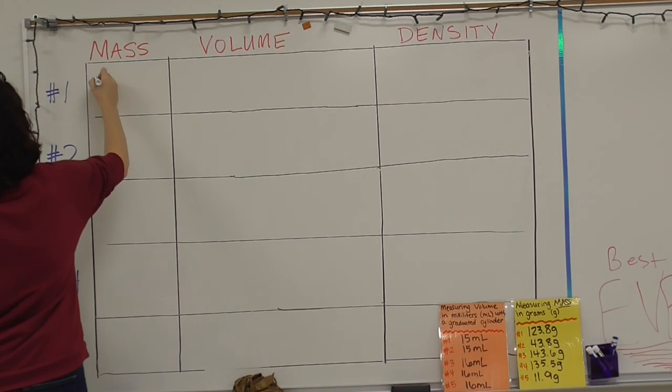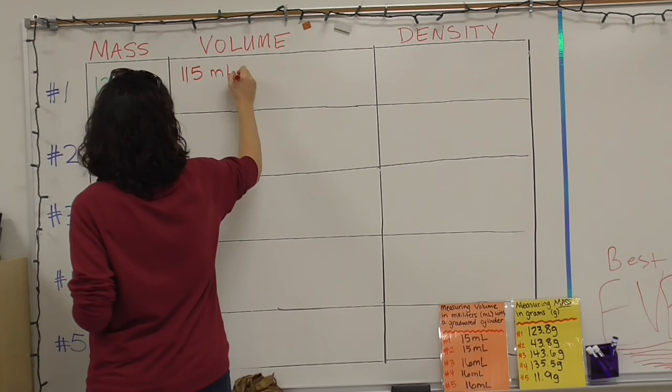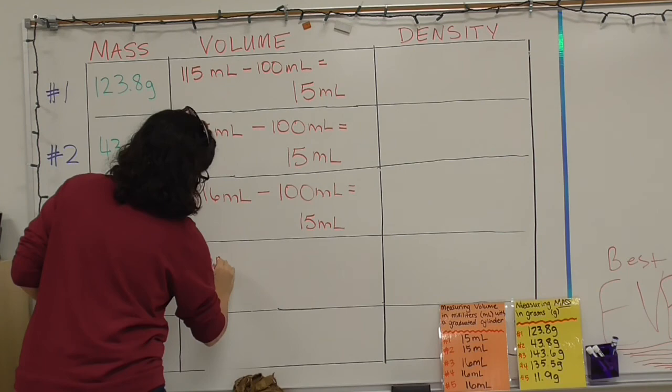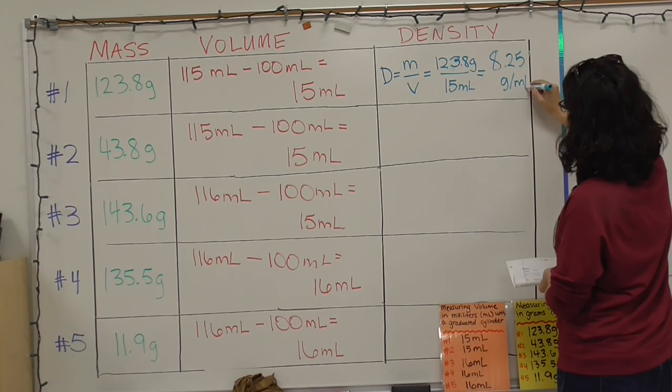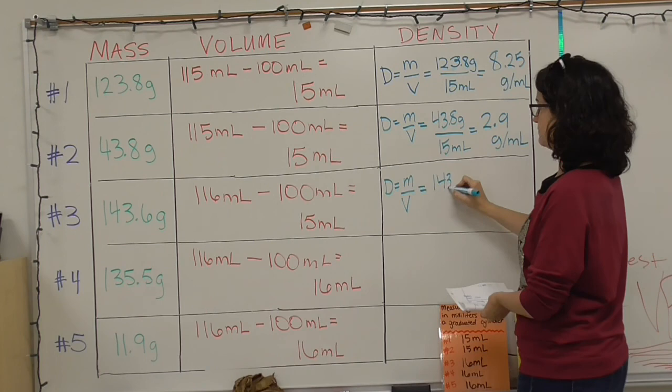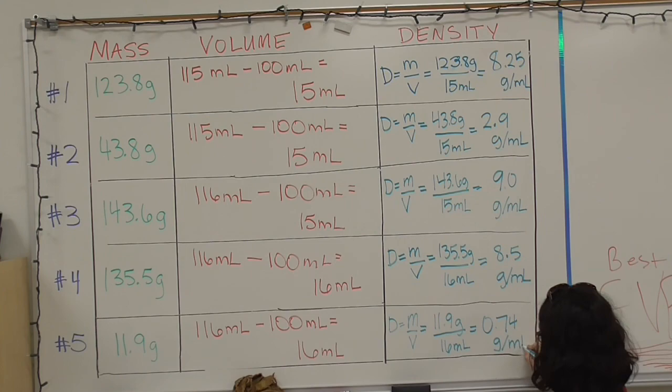Now that we've done our measurements for mass and volume, we can go ahead and fill out our grid on the board. In the column for mass, I'm going to make sure to label them with G for grams. With volume, I'm going to make sure to label them with ML for milliliters. And for density, we're going to write G slash ML or grams per milliliters. Now you're going to need to use that formula. Density equals mass divided by volume. So for number one, that would be 123.8 grams divided by 15 milliliters, which will give you about 8.25 grams per milliliters.